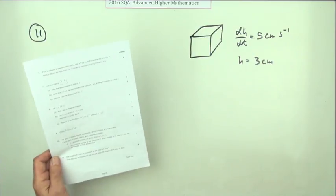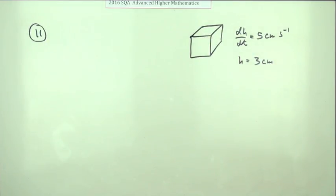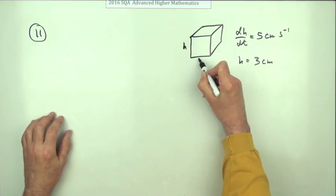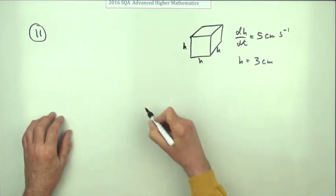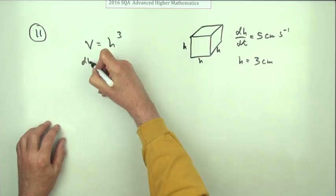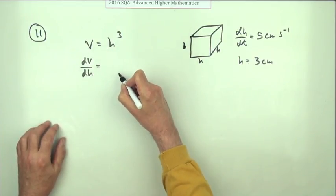It must mean it maintains the shape of a cube. There's two ways of doing this. The formula would be, if the height's h, then all the other sides are h, so the volume would just be h cubed. So dV/dh will be 3h squared.